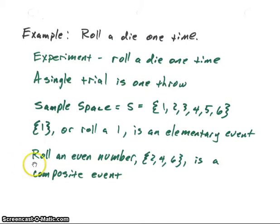We could also have a different event, a composite event. Suppose we say we want to roll an even number. Then an even number would be two, four, or six. And that would be what we would call a composite event. We'll just use the term event for either of those.